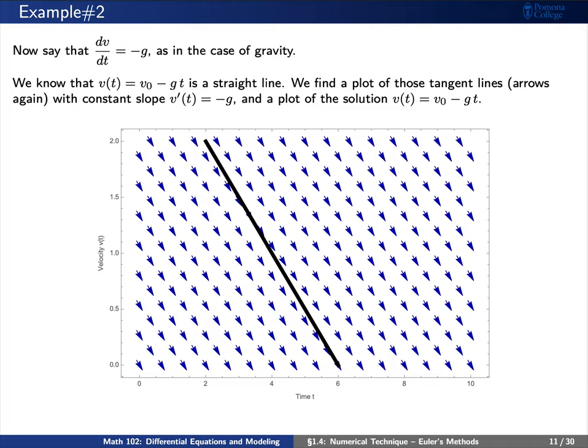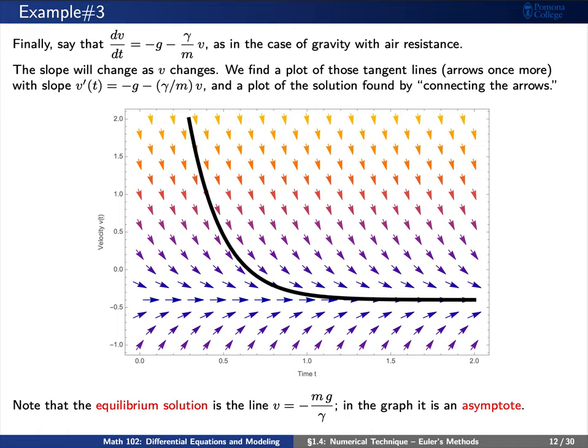Then at every point in this grid, we can draw an arrow, and this arrow represents a small line that has a negative slope, that is slope negative g. As we connect all of the arrows together, we then say that we have a straight line, which corresponds to the velocity.